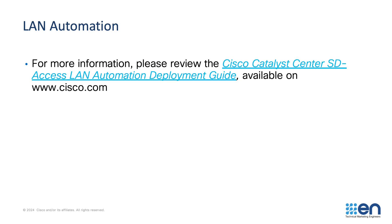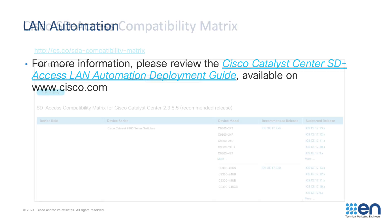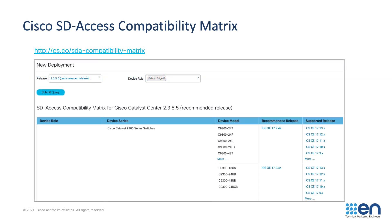There is a LAN automation deployment guide on Cisco.com — I'll post a link in the notes below this episode. As a friendly reminder, we have the Cisco SD-Access compatibility matrix which lists what platforms are supported in SD-Access and in what roles, what IOS XE images are supported on those platforms, and also a recommended image for that platform in that role. This matrix does change periodically, so I'd suggest reviewing the actual matrix rather than relying on this slide, and we'd typically recommend proceeding with the recommended image for the specific platform and role.